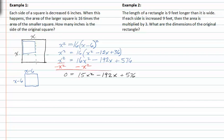Now we can divide out the common factor of three in each of our terms, recognizing that zero divided by three is still zero. We get zero is equal to five x squared minus sixty-four x plus one hundred ninety-two.